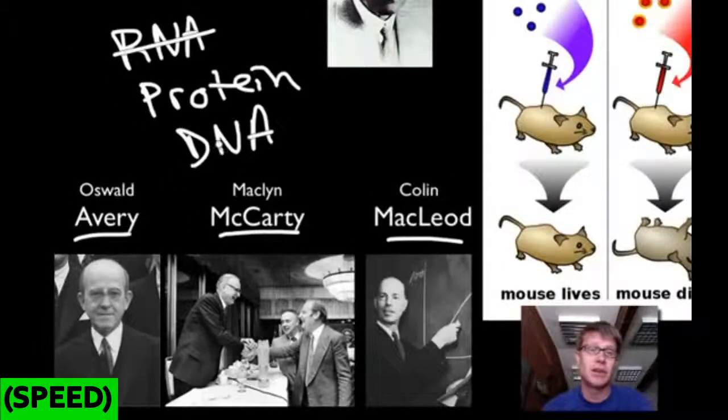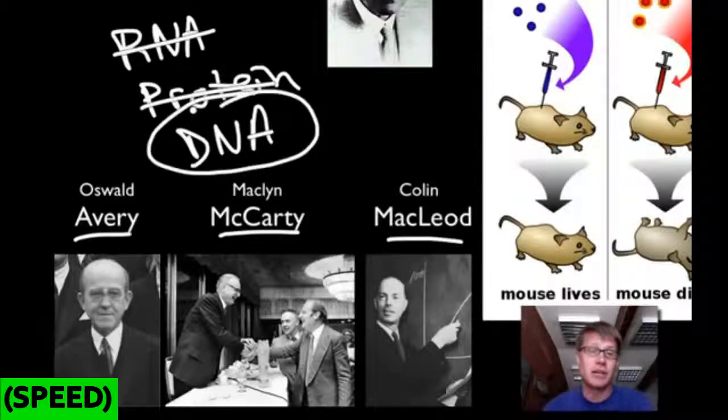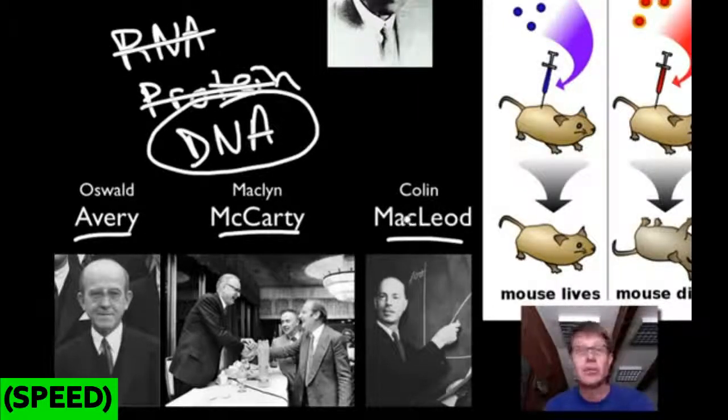So they added ribonuclease and broke down the RNA, and it still was able to transform. They added a couple of enzymes, trypsin and chymotrypsin that break down proteins, it was still able to transform. And then they added a deoxyribonuclease, which breaks down DNA, and then they couldn't transform. And so what did Avery McCarty McLeod figure out? DNA was this transforming factor.